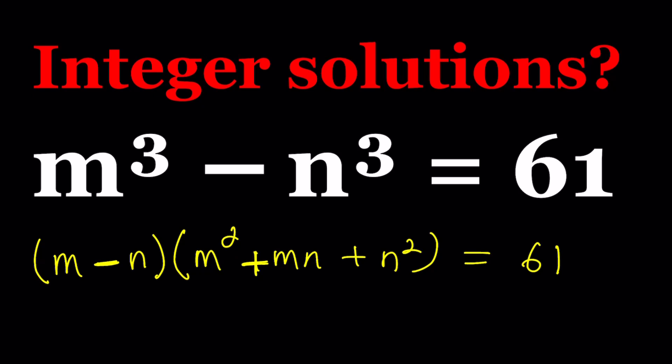We can factor it into m minus n times m squared plus m n plus n squared. Notice that when there's a minus sign, this is going to be a plus sign and vice versa. And of course, this is equal to 61. Now, 61 is prime. It can only be factored a certain way. Since m and n are integers and 61 is prime, it's only divisible by 1 and 61. So let's consider those cases.